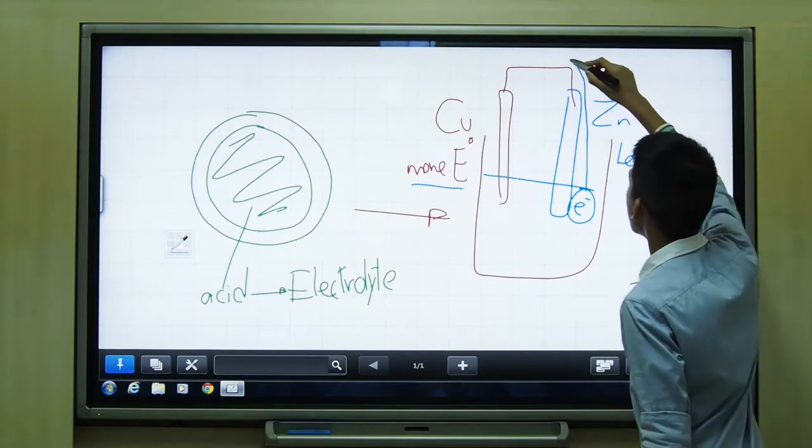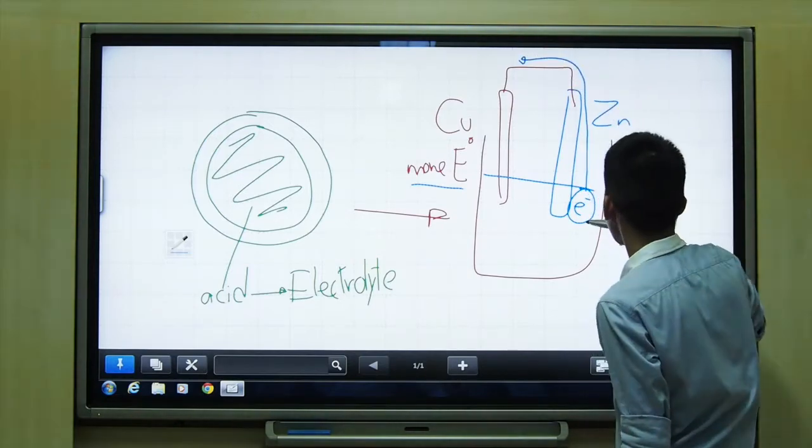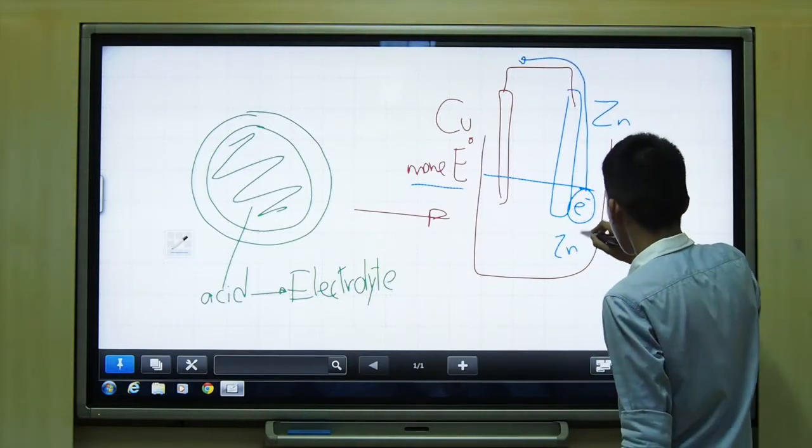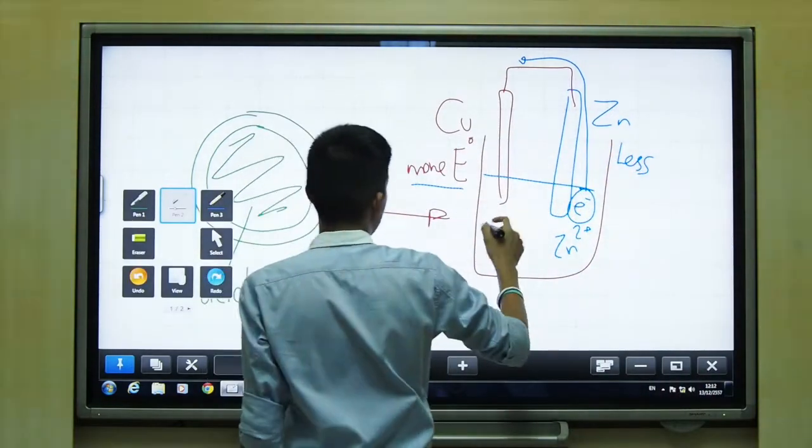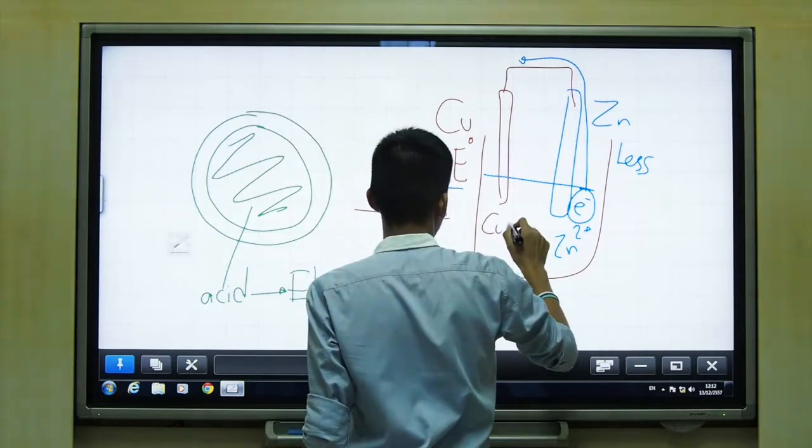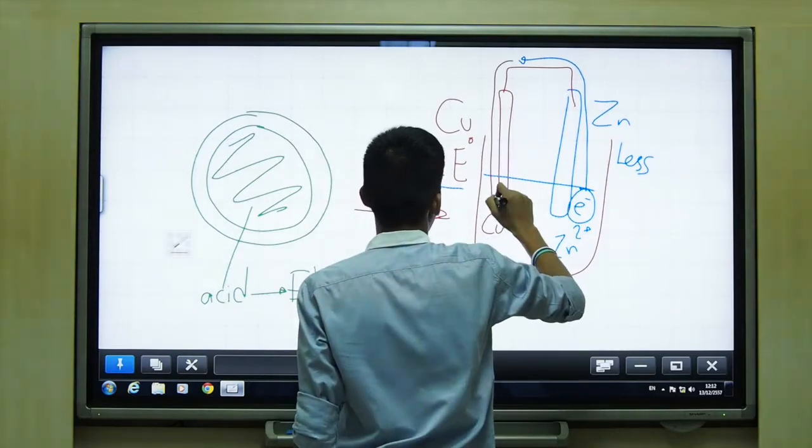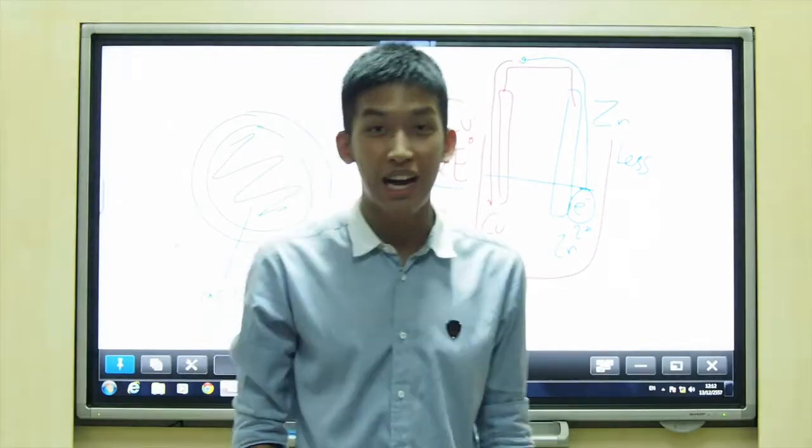Electrons will flow out from zinc. Zinc will lose its electrons and we have zinc ion. And copper will gain electrons. That's why we have electricity in the lime.